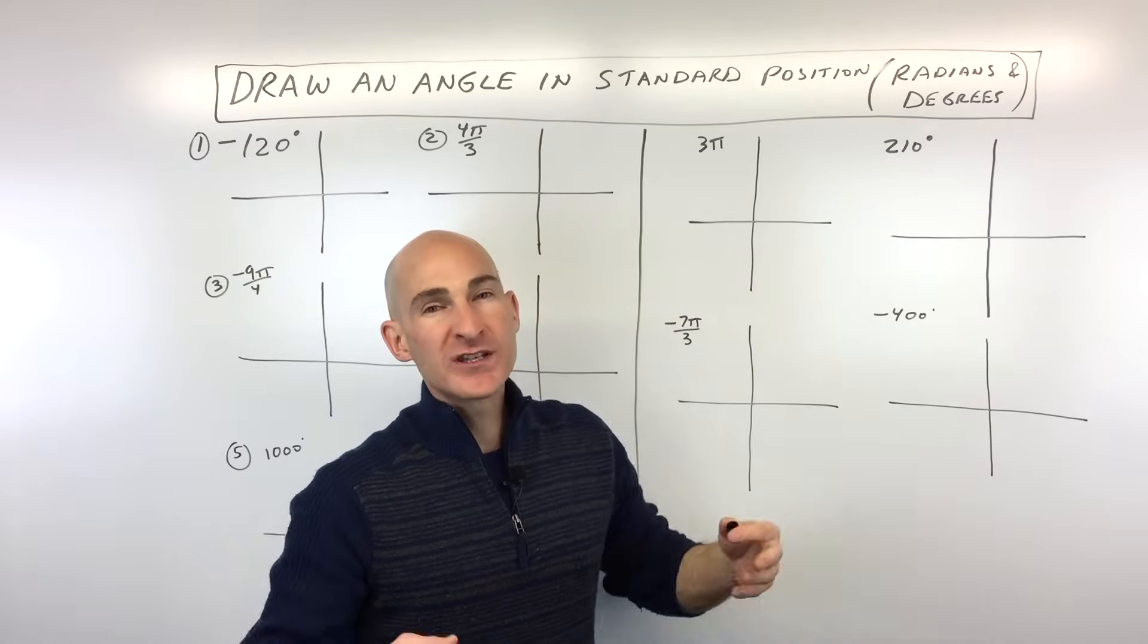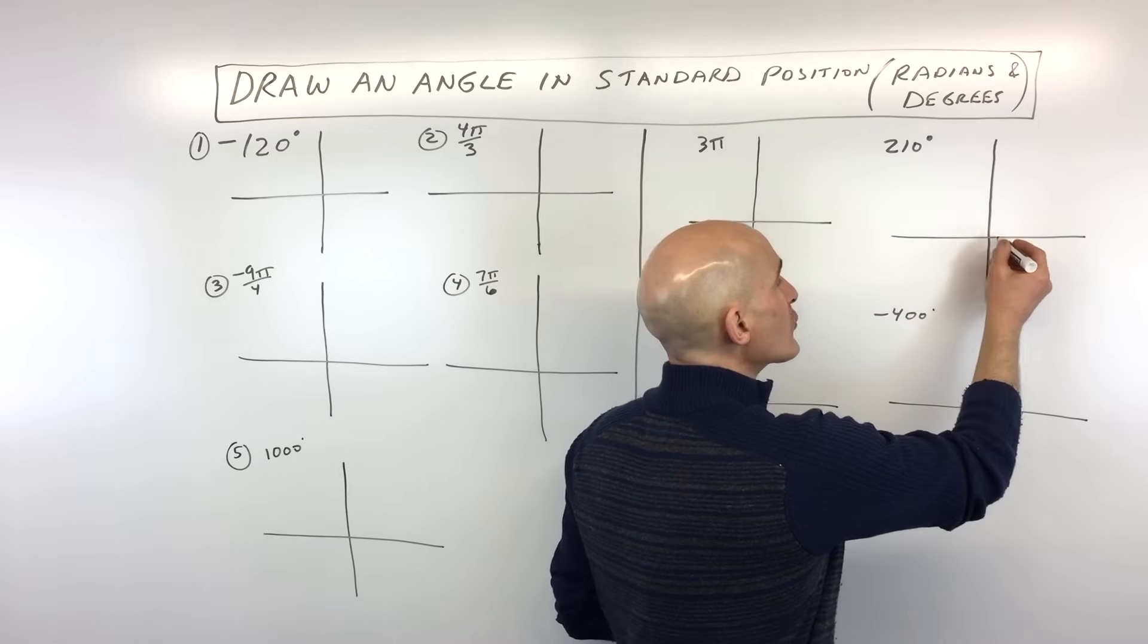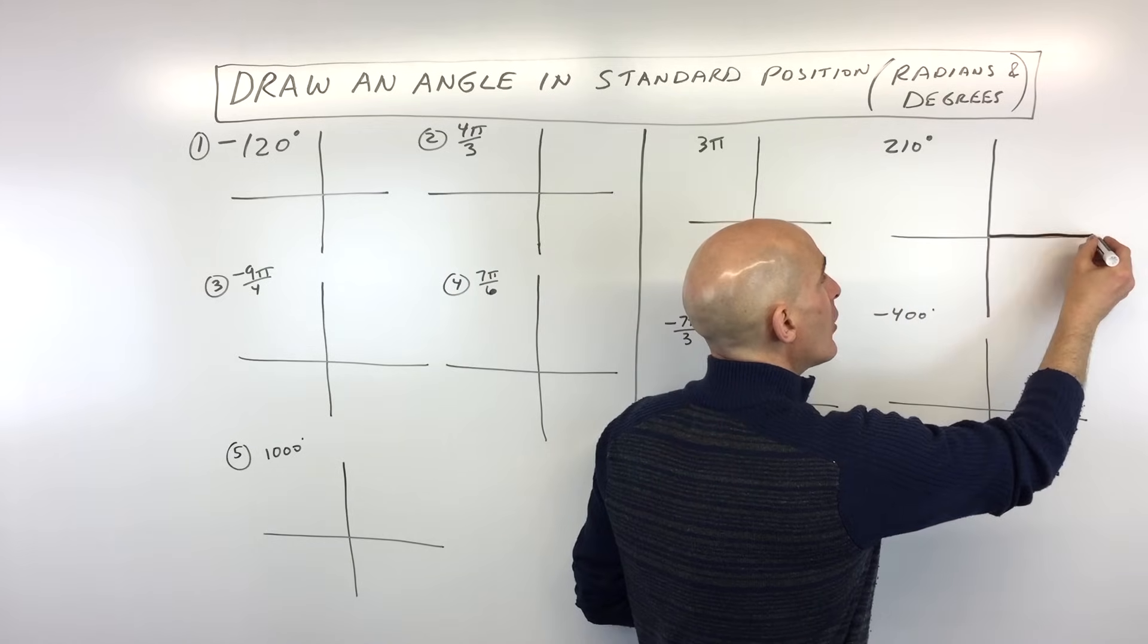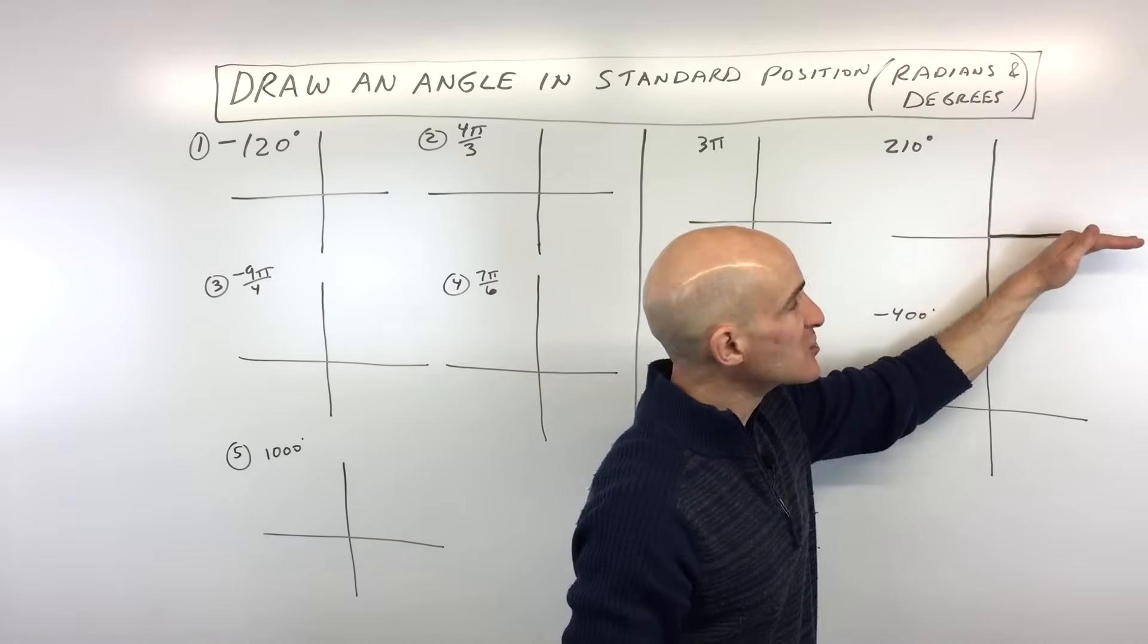The first thing we want to understand is what does it mean to draw an angle in standard position? Well, what you want to do is you want to have your initial ray pointing in the positive x-axis direction. So it's pointing towards the right here.